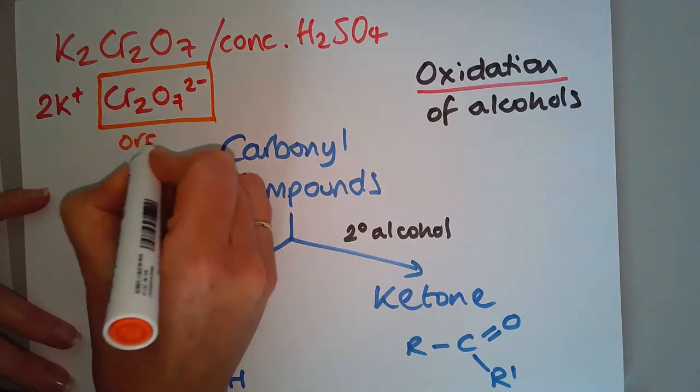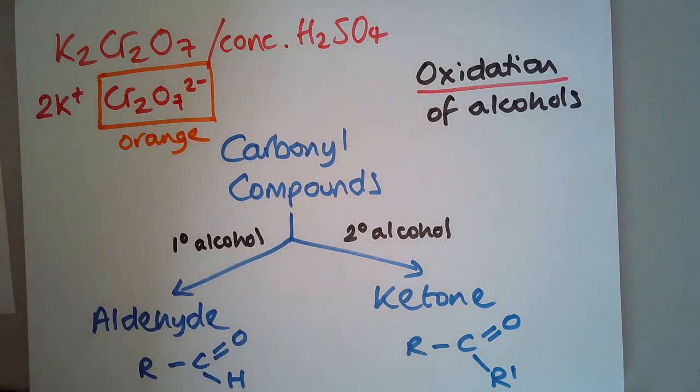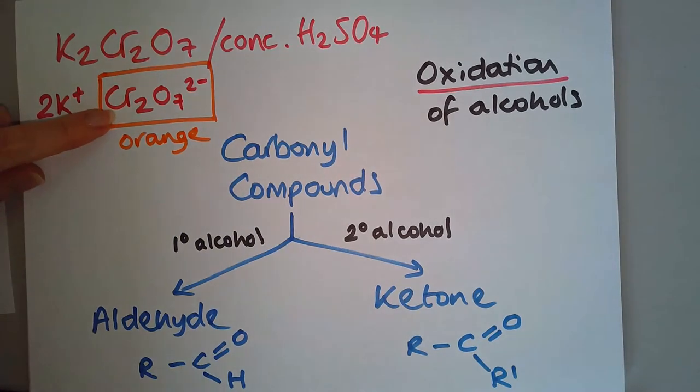This is originally orange, so you can see a visible change when this oxidation happens because this will change color. It will go green. That's because the chromium gets reduced to Cr³⁺, and you'll see that in your notes.